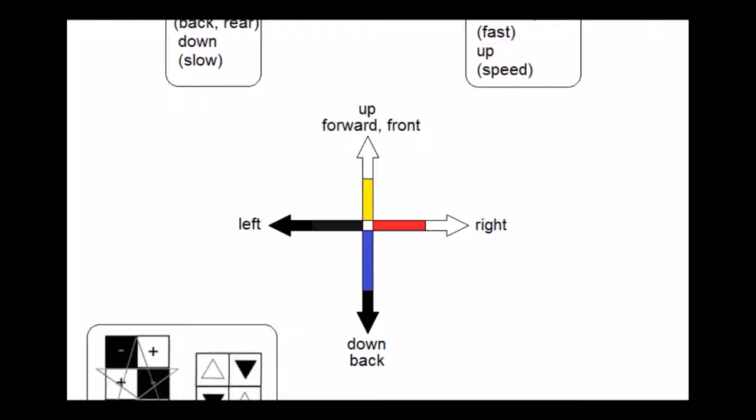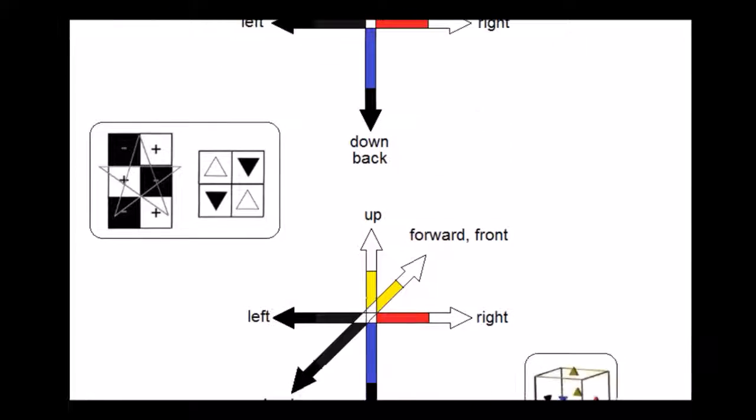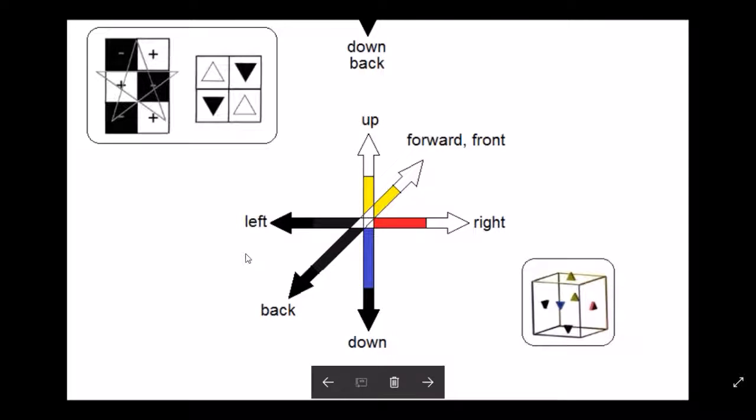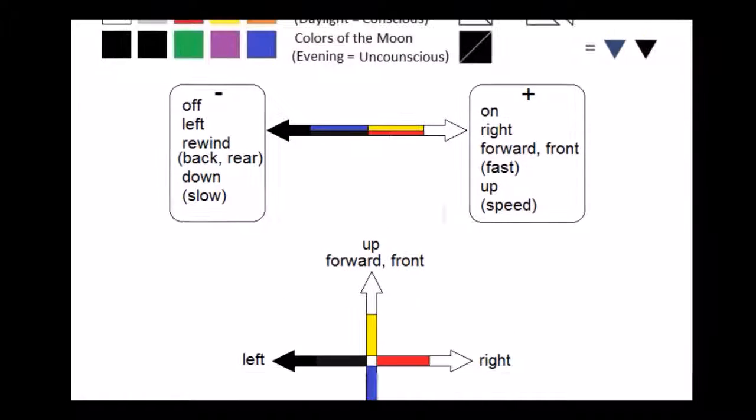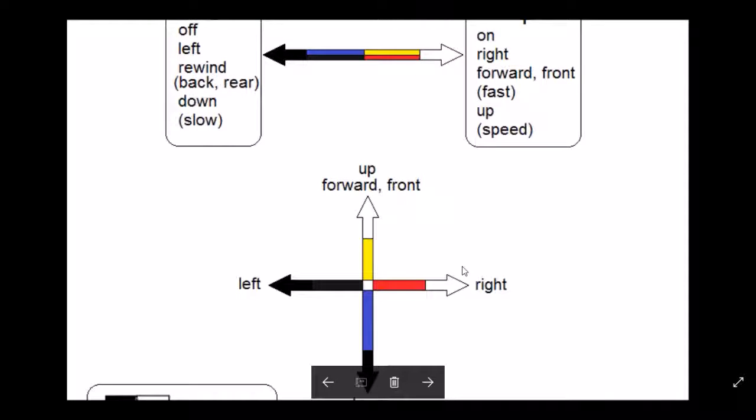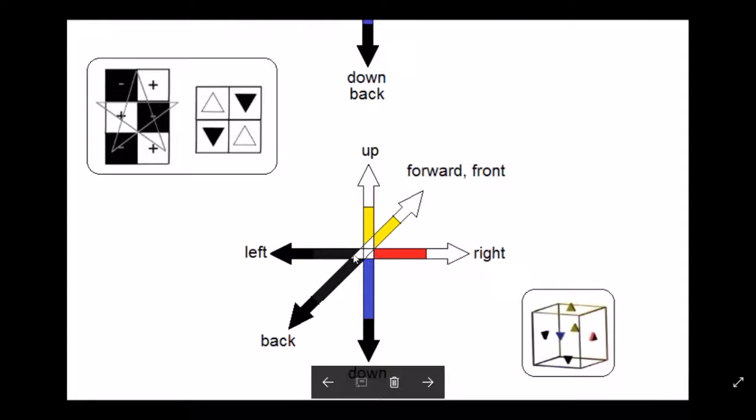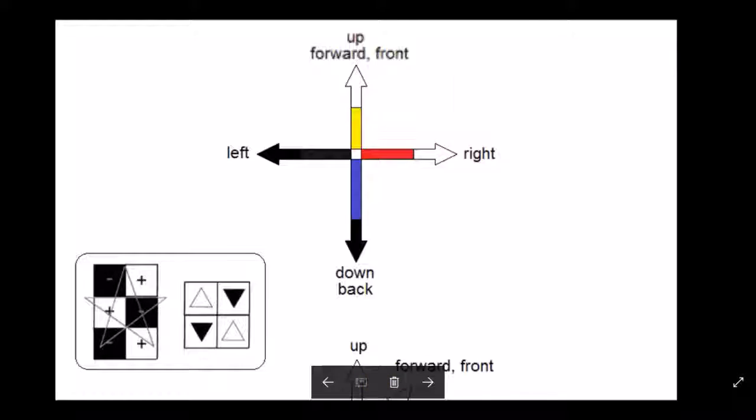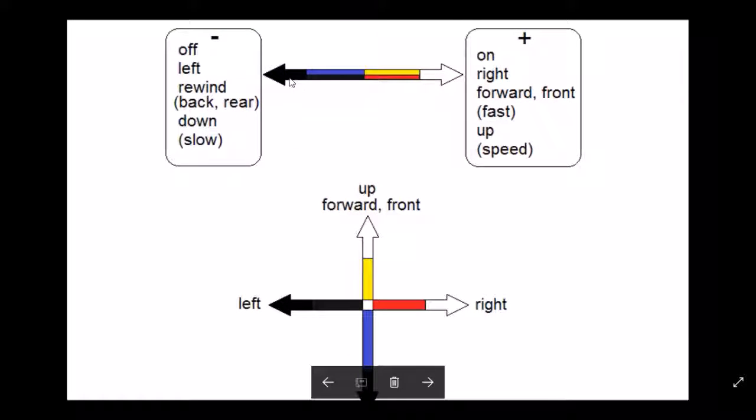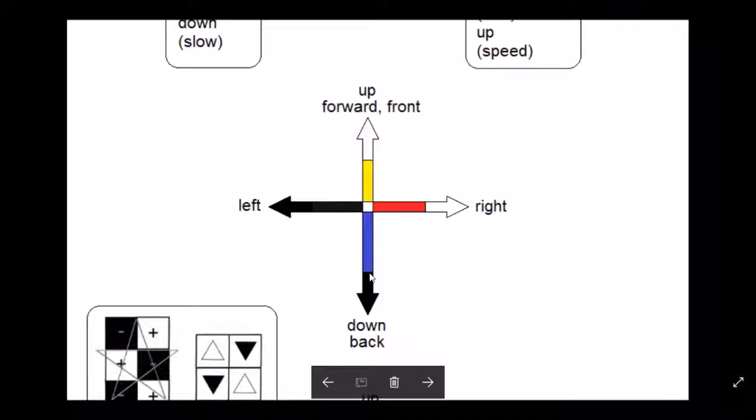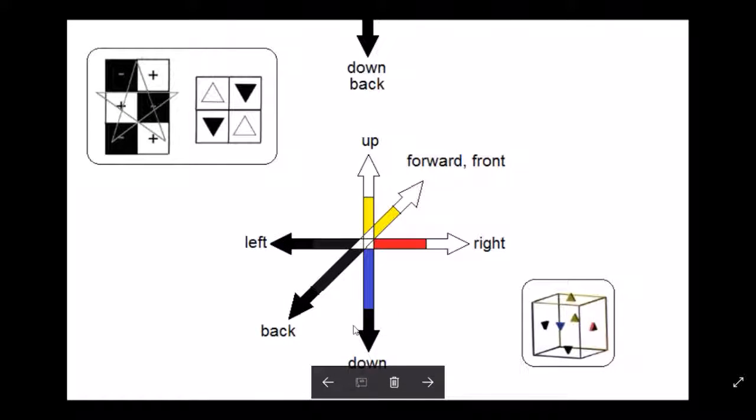while left is also down and back. We can see that on our next image here, where the directions have been distributed into six directions. We've gone from two to four to six. Our one conscious direction has become two conscious directions, and then our two conscious directions have become three. Our one unconscious direction has become two unconscious directions, and then that's become three. We see that left is also back and down.